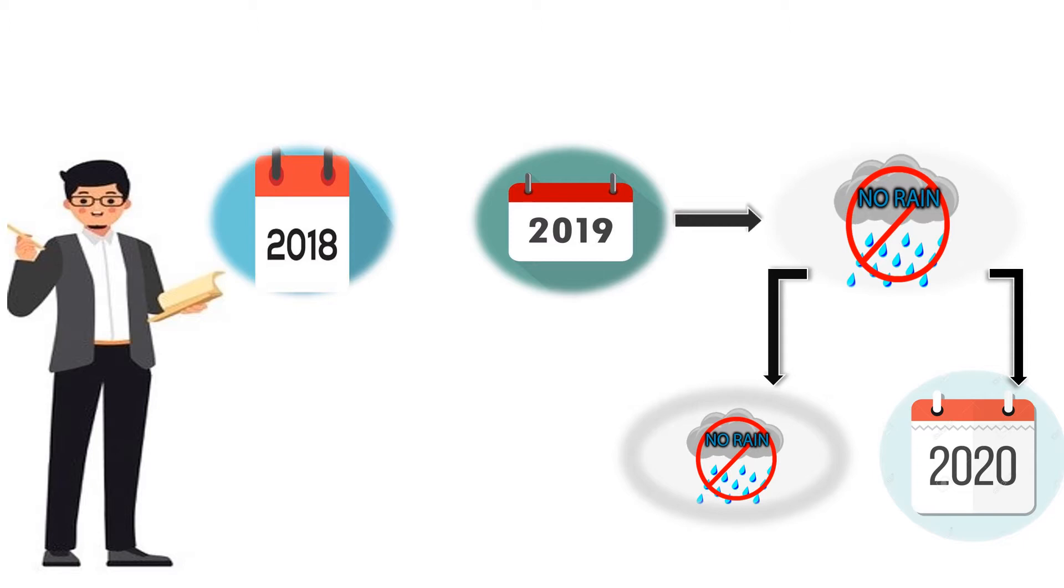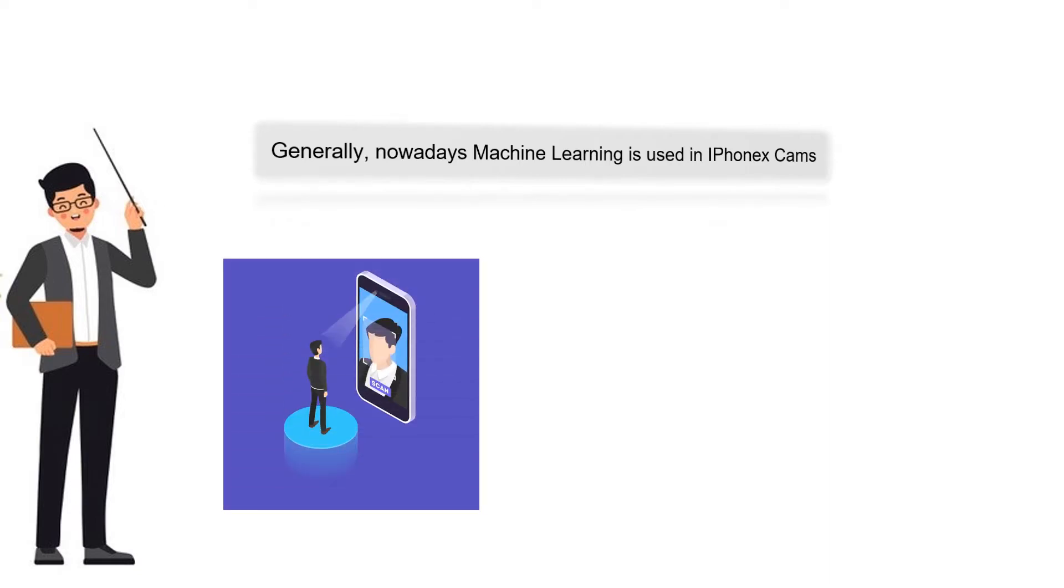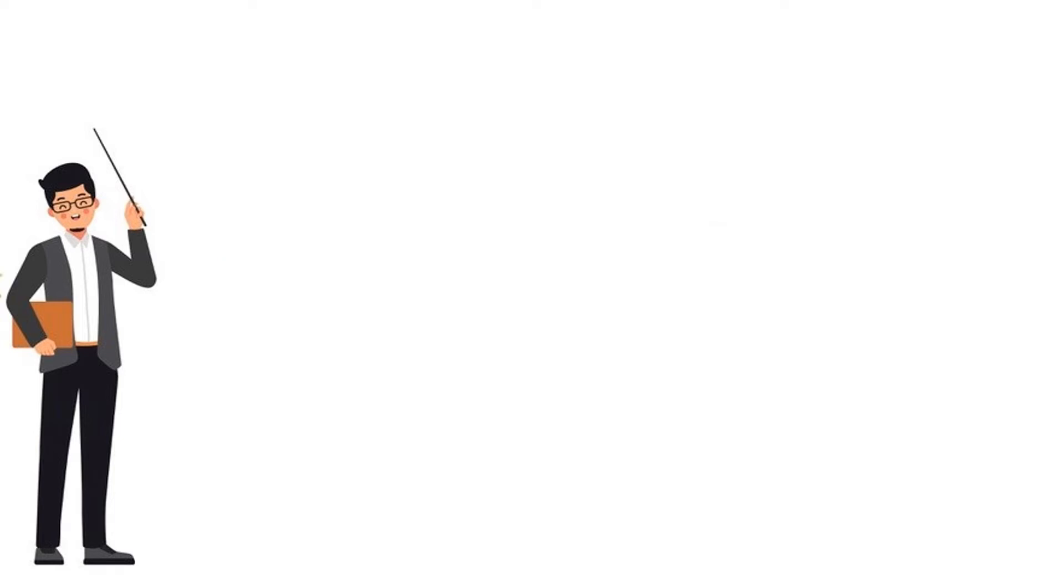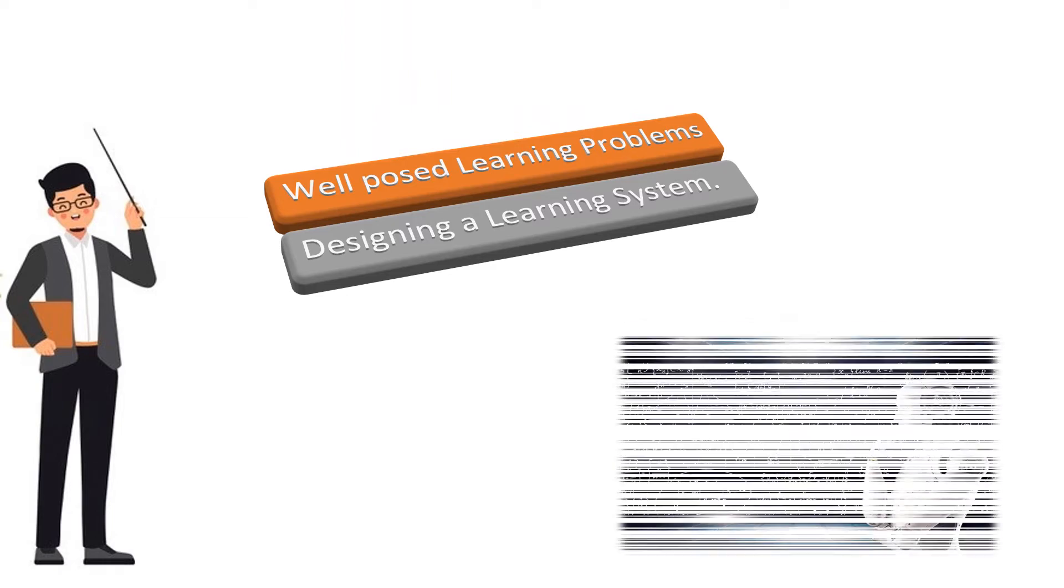From this example we just got to know about machine learning in a short while. Generally nowadays, machine learning is used in iPhone X cams as it is helping in face recognition and it is also used in self-driving cars as well. By falling into the further topics we will get to know it precisely.